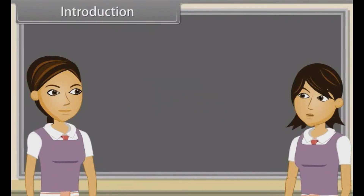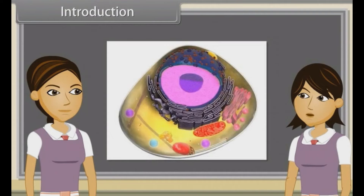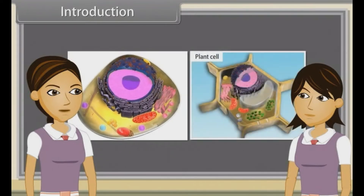Ankita, we have discussed cell theory, structure and functional regions of cell already. And now we'll discuss that there are two types of cells, plant cells and animal cells.